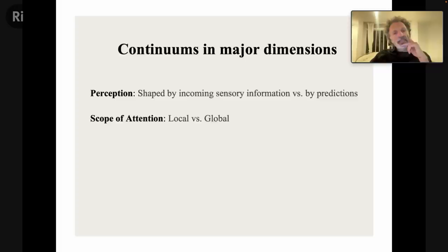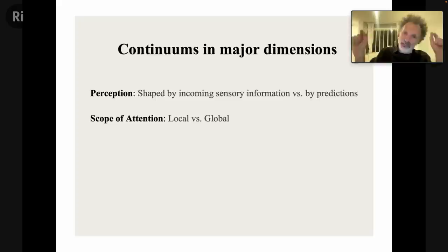The second dimension is attention. As I just showed you with that demonstration, attention can be to global or to local details — we can be seeing the forest or seeing the trees. These are different states, different ends of a continuum. Attention can be very localized or very global.